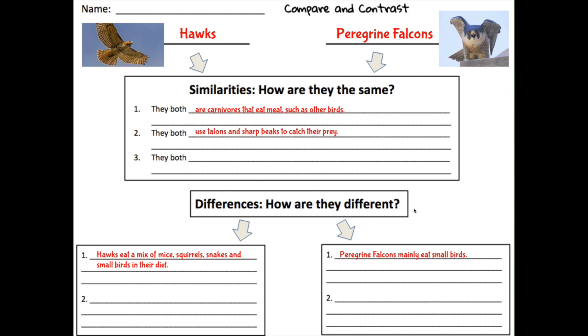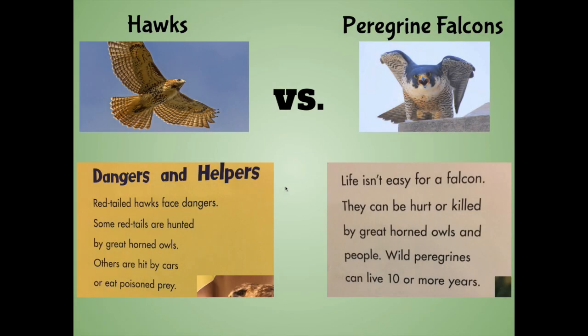We also saw a difference when it came to hunting. Hawks eat a mix of mice, squirrels, snakes, and small birds in their diet, where the text on peregrine falcons told us that they eat mainly small birds. We didn't completely fill in our worksheet yet, so it might be a good idea to continue our research and look at another subtopic.